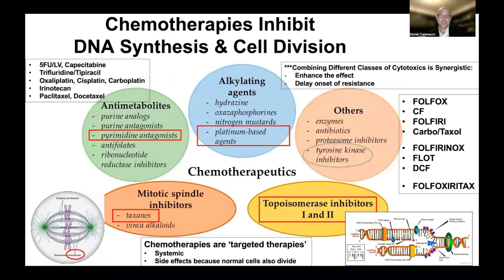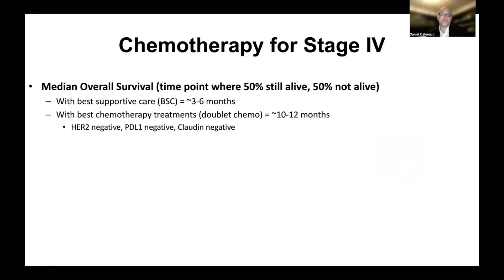In the principles of chemotherapy video, I introduced all the different classes of chemotherapy agents, some examples of the actual drugs in each class, and talked about how combining those chemotherapies leads to optimal disease control in various regimens we're going to discuss. In the principles of clinical trials, I started to introduce why chemotherapy is used, and we alluded to historical data showing that no active therapy or best supportive care had median survivals of around three to six months.